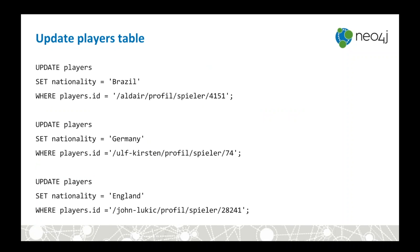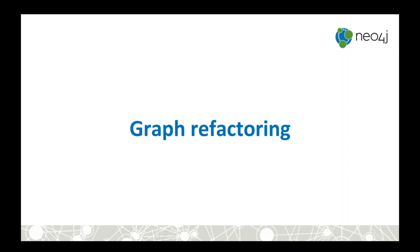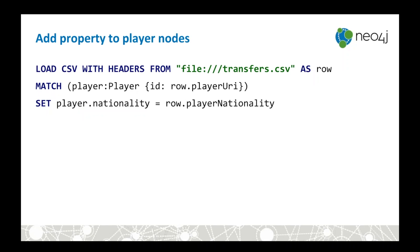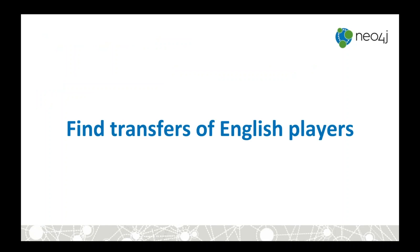The graph equivalent: instead of adding a column, we just add an extra property. There's no separate ALTER step. We use LOAD CSV, MATCH the existing player (since it was already created), then SET the nationality property for every player found. That's it — we now have nationality on the player nodes.